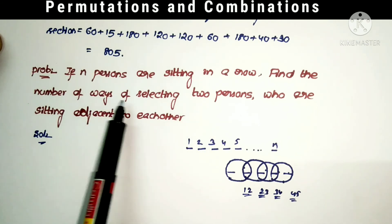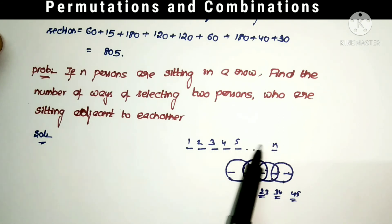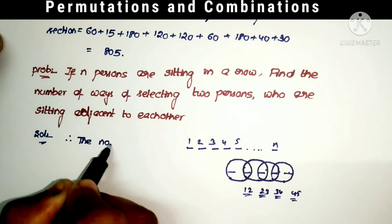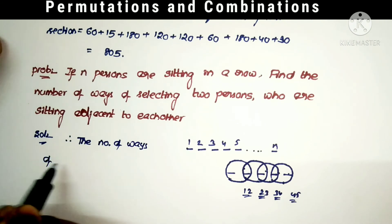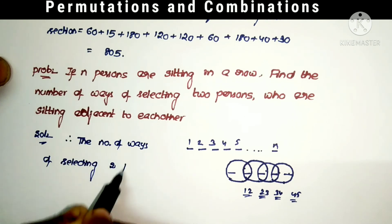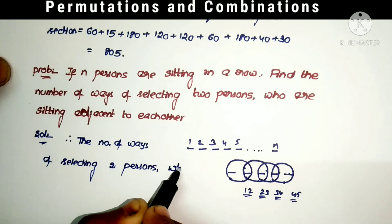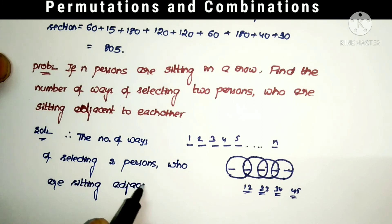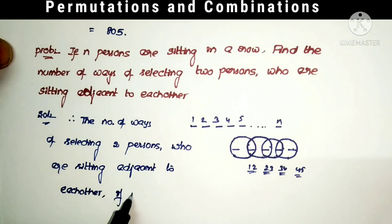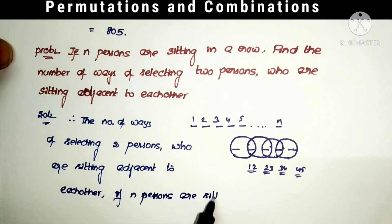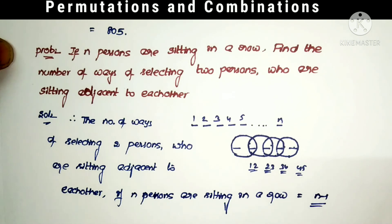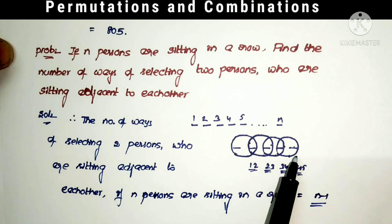For n persons sitting in a row, the number of ways of selecting two persons who are sitting adjacent to each other is equal to n minus 1. When we take 5 persons, the answer is 4, which is 5 minus 1. By applying the same concept, for n persons the answer is n minus 1.